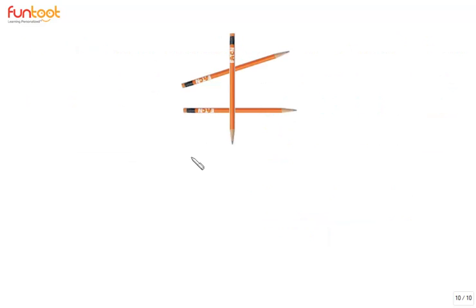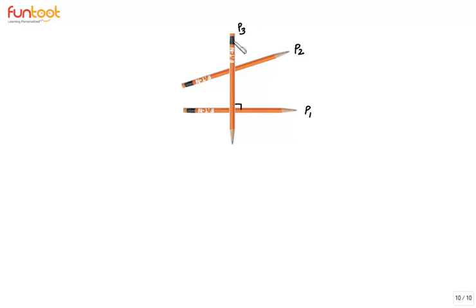We can understand what is being said in the proof by taking the example of these pencils. This pencil, we call it P1, is not parallel to pencil P2. Pencil P3 is perpendicular to P1 — but is P3 also perpendicular to P2? No, we can see that this angle is not 90 degrees.